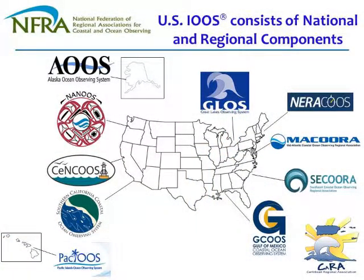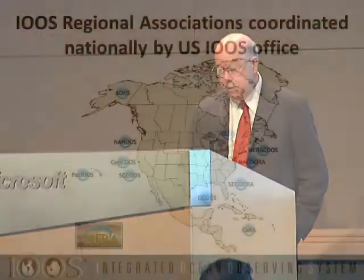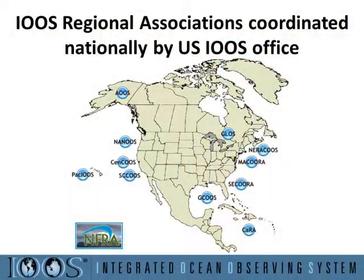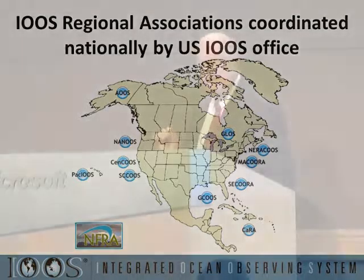These are the 11 regional associations around the country. Laura mentioned AUSE, up in Alaska, and here in the Pacific Northwest, we are NANUS. All of these regional associations are coordinated nationally by the U.S. IUSE Office. We're pleased today that the director of the U.S. IUSE Office has joined us — Stenka Willis, would you please raise your hand or stand up for us?